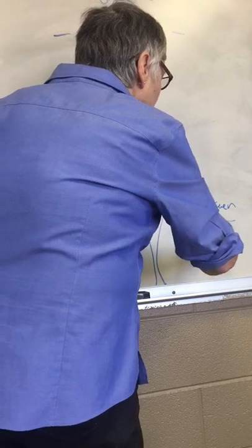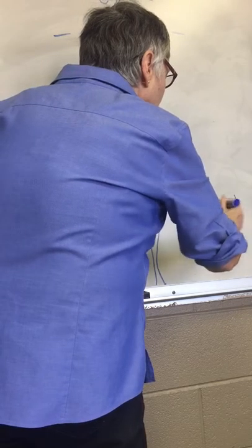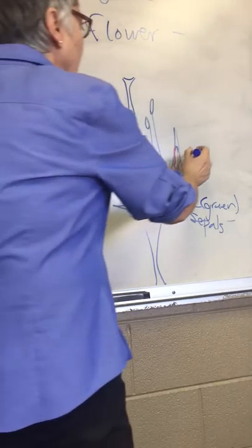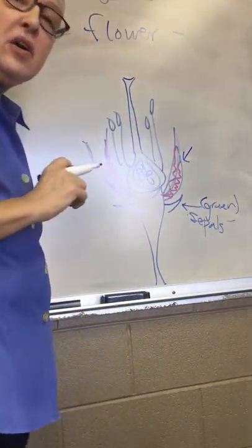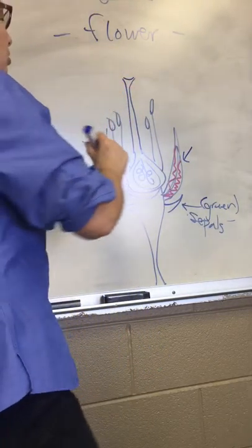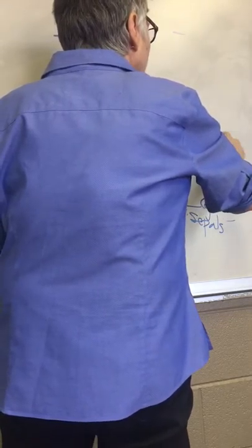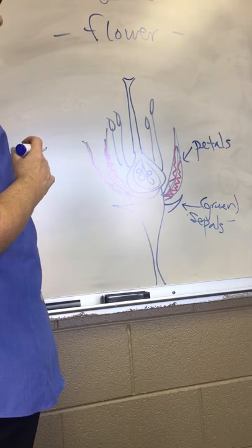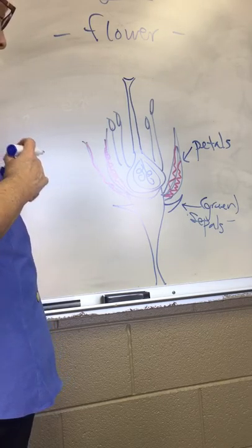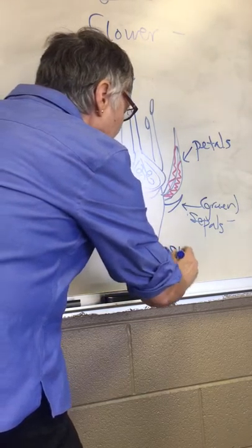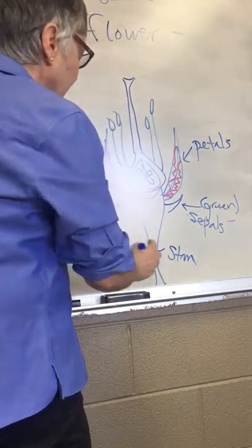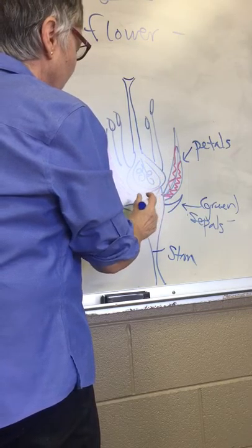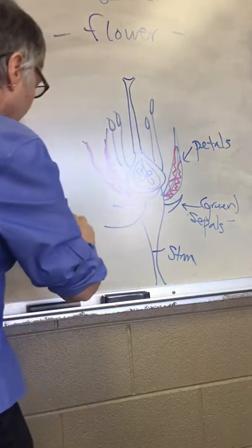The flower is going to be composed of some outer leaves, and the outermost are actually green leaves, and these are called sepals. Most flowers are going to have colored leaf-like structures that are called petals. So in this case, this flower has purplish colored petals. This is the stem, and the stem actually ends at an enlarged structure that's called the receptacle.